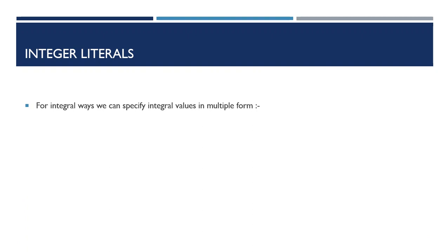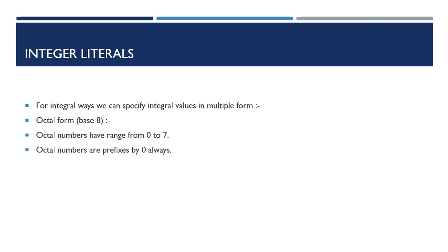We can represent our integer literals in multiple forms. The very first form is octal form. We can represent our integer in octal form. The allowed digit range for it is 0 to 7. If I use any number outside this range, my compiler is going to throw an error. An octal number is always prefixed with 0 — it is mandatory. The other digits should be in the range of octal numbers, otherwise we will get a compile error.